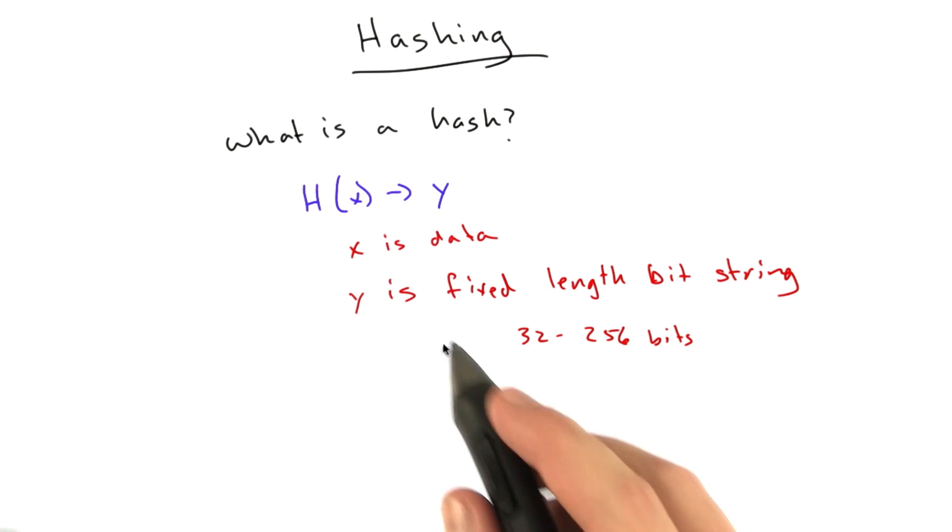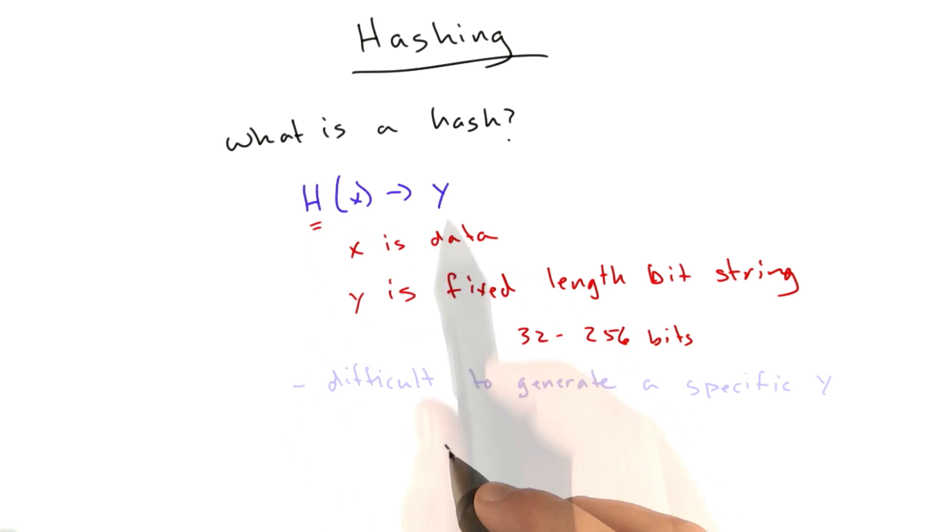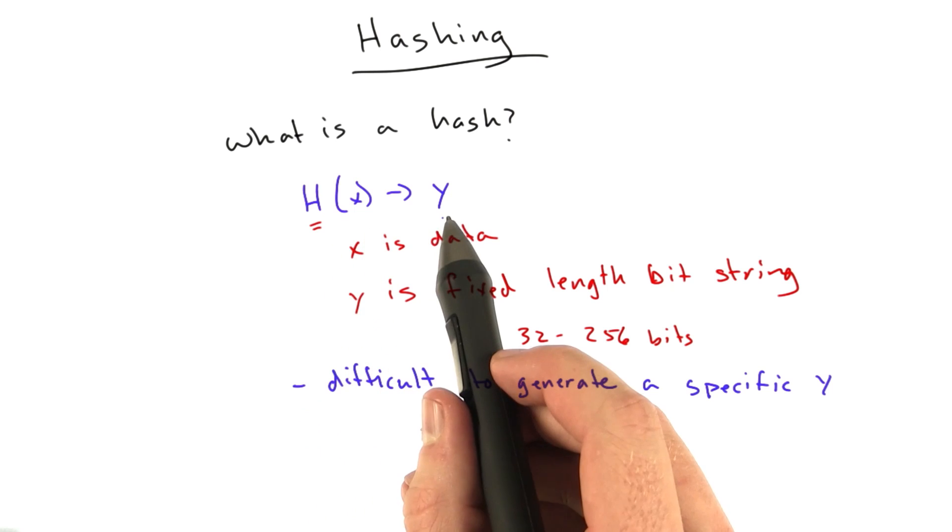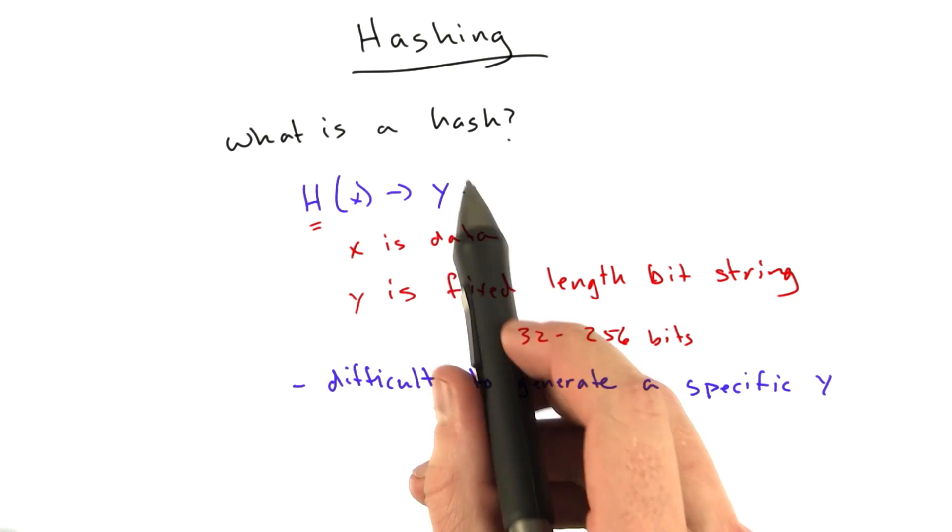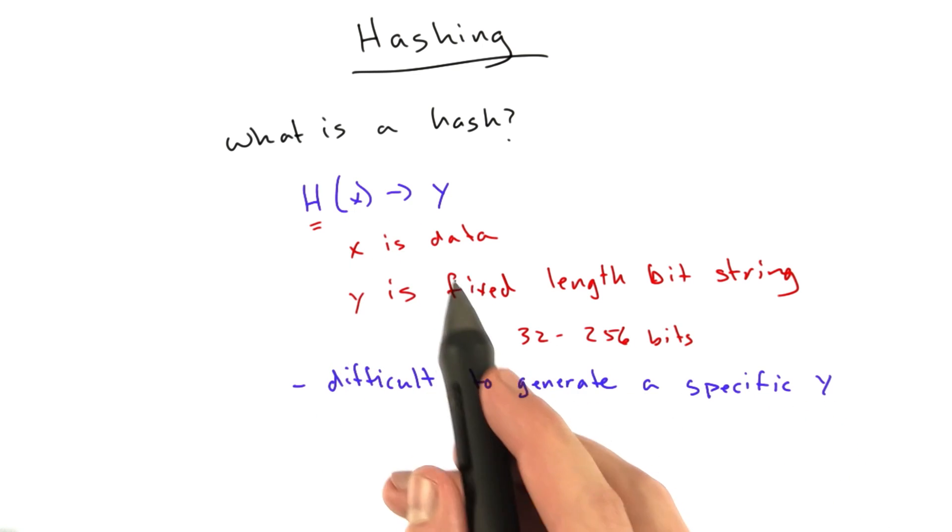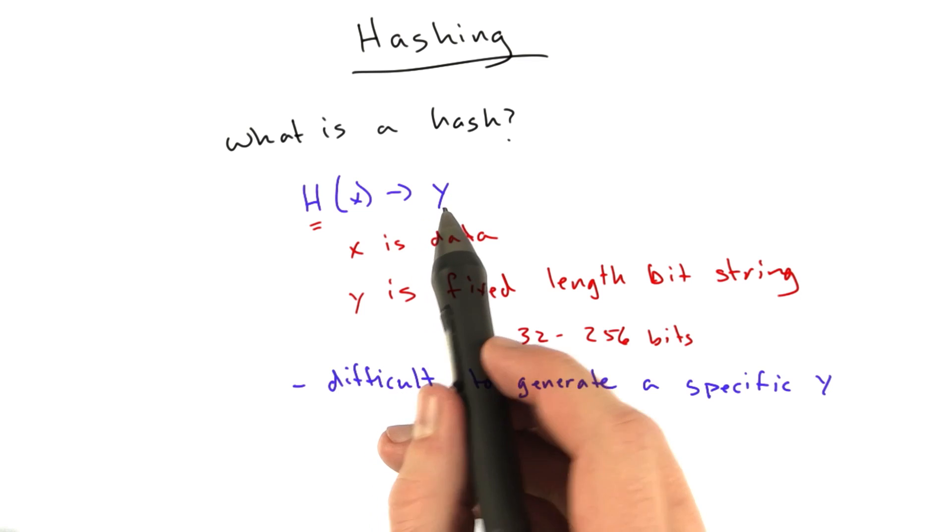And hashes have a lot of uses, and they have a lot of properties too. So let's talk about some of the properties of this hash function h. Generally, a property of a good hash function h is that for a particular value of y, for a particular output, it's really difficult to find an x that'll generate that y. It's very difficult to find a piece of data that hashes to something specific.